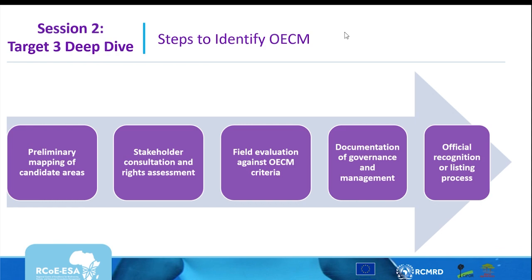What are the steps to identifying OECMs? The first step is preliminary mapping of candidate sites, since OECMs must have geographically defined boundaries. Then, conduct stakeholder consultations and assess rights holders and owners. Next, evaluate the candidate sites against the OECMs criteria, followed by documentation of governance and management, and finally official recognition of the candidate areas as OECMs.